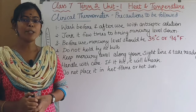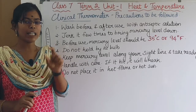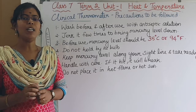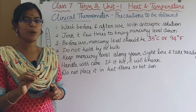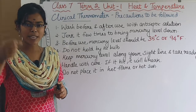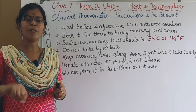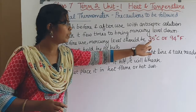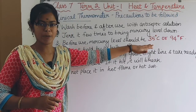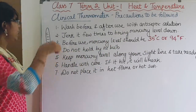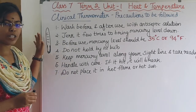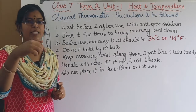How to use the clinical thermometer: First, wash it with an antiseptic solution. We then check the temperature of the patient's body. First, jerk the thermometer to bring the mercury down to a low level — 35 degrees centigrade or 94 degrees Fahrenheit. Then hold the clinical thermometer in the patient's body, in the armpit or mouth. Once done, read the temperature by keeping the thermometer at the line of sight.